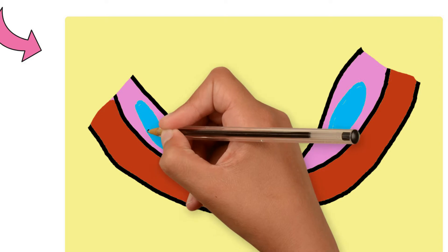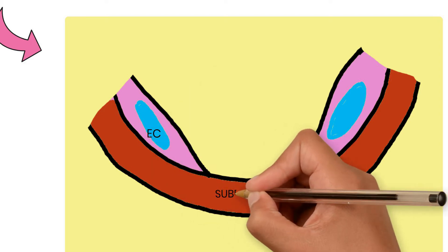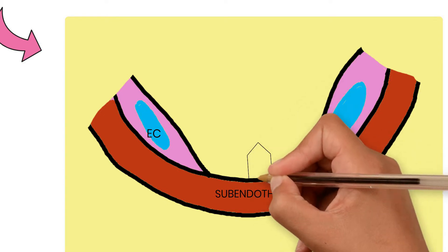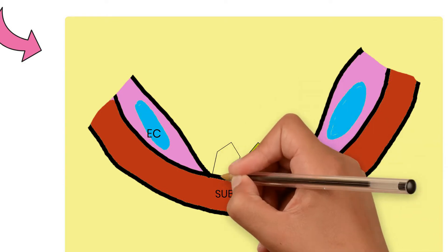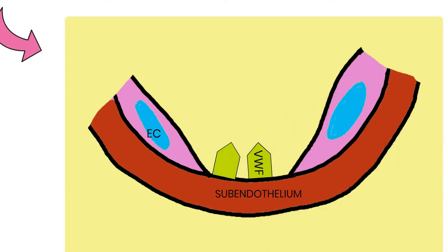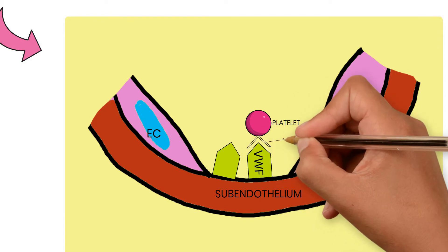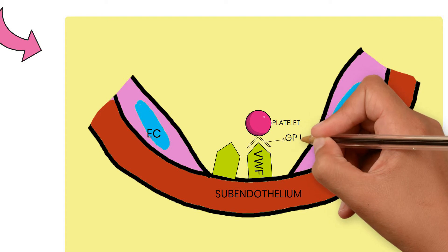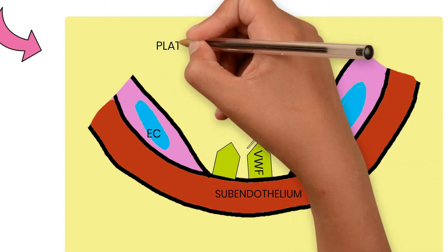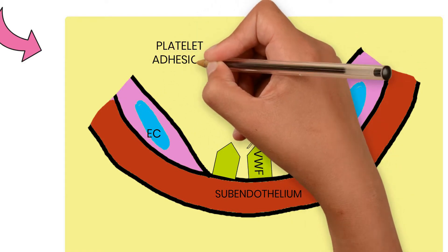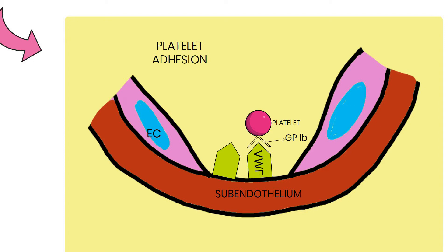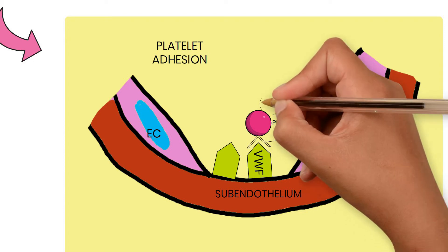In platelet plug formation, the injured blood vessel exposes subendothelial collagen at the site of vessel injury. Von Willebrand factors bind to this subendothelial collagen, and at the same time von Willebrand factor binds to platelets with the help of the platelet glycoprotein 1b receptor. This step — where platelets bind to subendothelial collagen with the help of von Willebrand factor — is known as platelet adhesion.